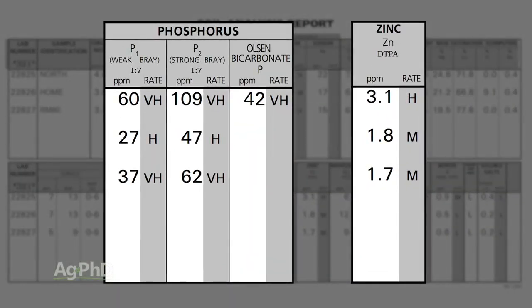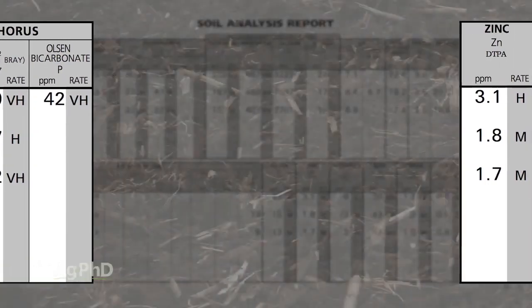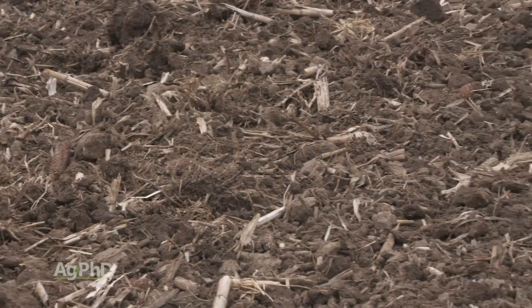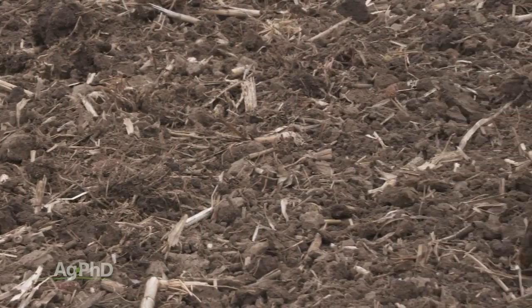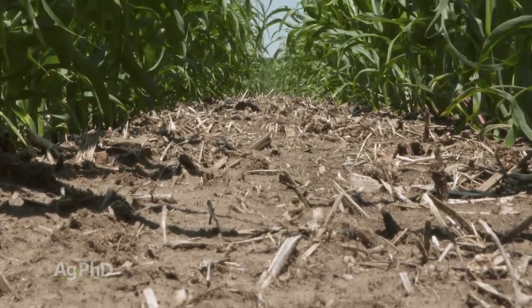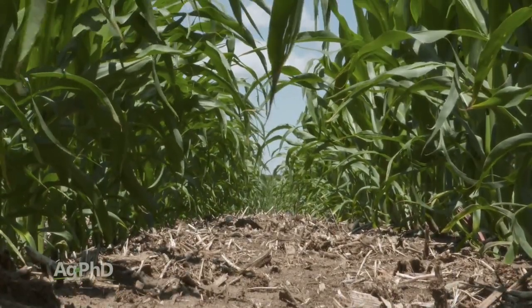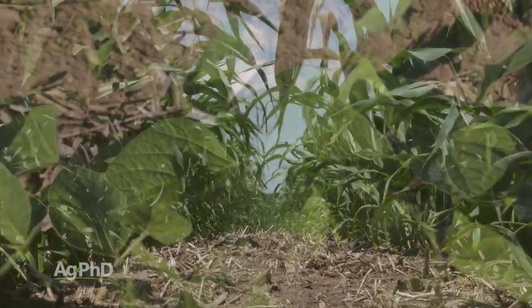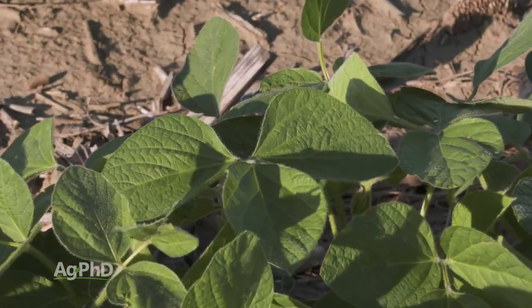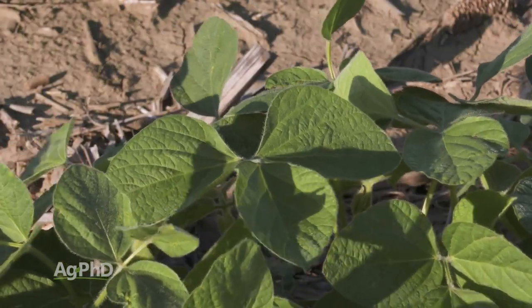When we have a high amount of phosphorus in soils, adequate levels of zinc become really critical. Before we go through what kind of levels you should have for phosphorus and zinc, let's talk about the importance of zinc in plants. It's actually involved in many different functions in the plant. Two specifically that have had a lot of impact on our own farm are cold tolerance and moisture absorption.